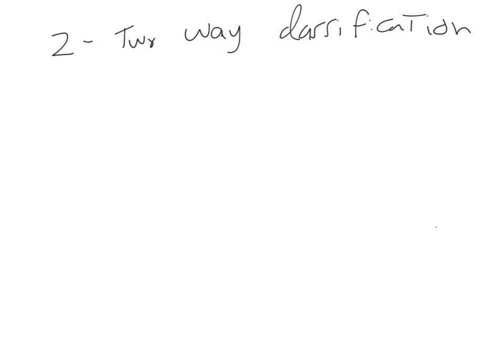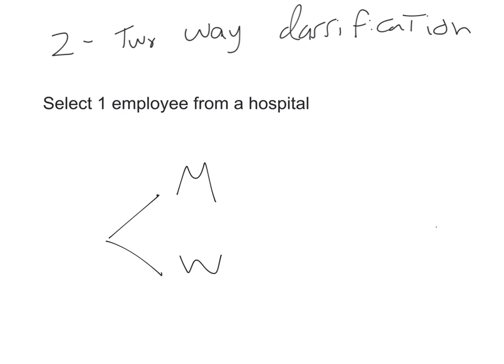In this video I would like to talk about the second case of multi-stage tree diagrams, which is a two-way classification. For example, let's assume we would like to select one employee from a hospital. We are interested in the gender of the person — he can be a man or woman — and also in his job, which could be a doctor or a nurse.